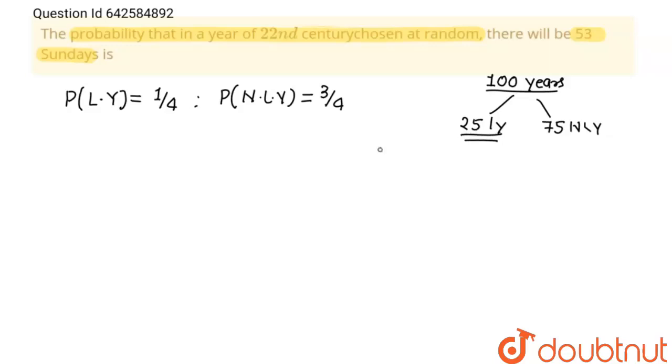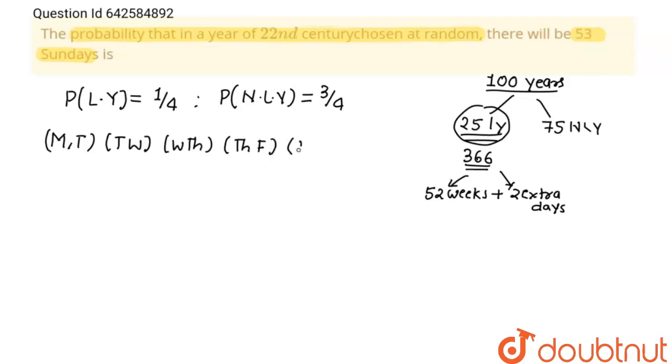Now see, in a leap year, there are 366 days which has 52 weeks plus two extra days. And those two extra days can be anything: Monday-Tuesday, Tuesday-Wednesday, Wednesday-Thursday, Thursday-Friday, Friday-Saturday, Saturday-Sunday, and Sunday-Monday.